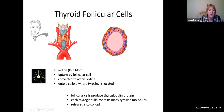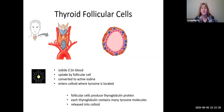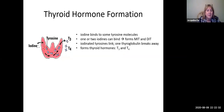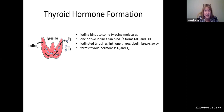Taking a detour for a moment — iodide in your blood is taken up by the follicular cells where it's converted to the active form, iodine. Once converted, it is released into the colloid where the tyrosine is located. The iodine binds to some of those tyrosine molecules, and either one or two iodines can bind — giving you monoiodinated tyrosine or diiodinated tyrosine.